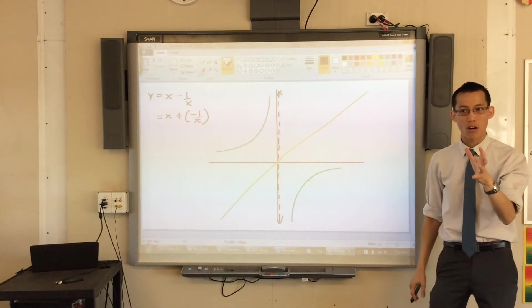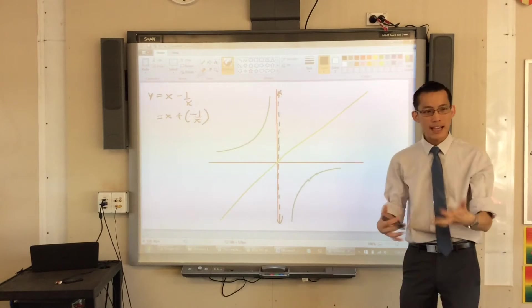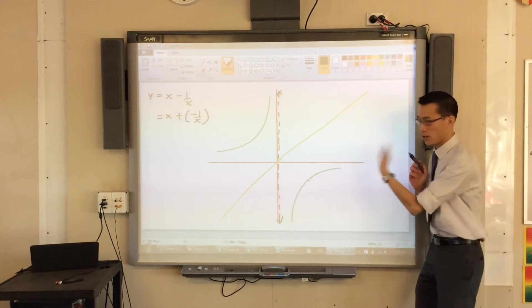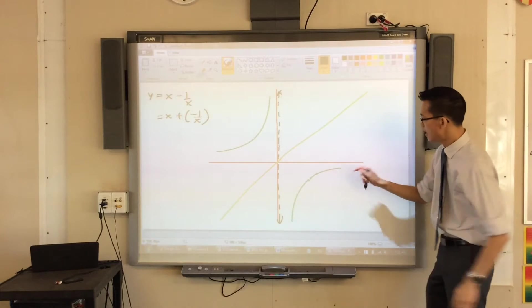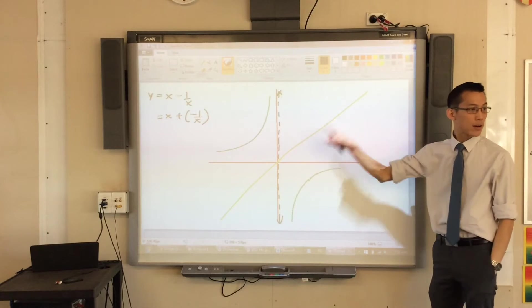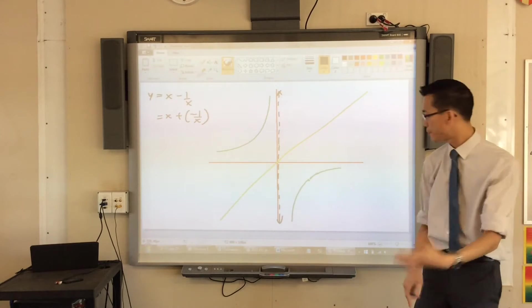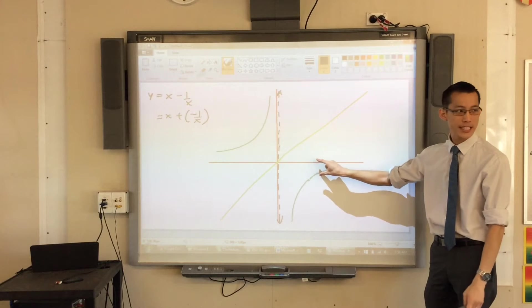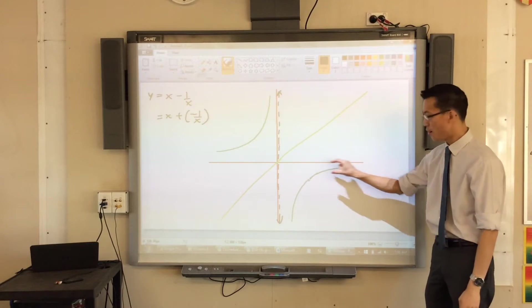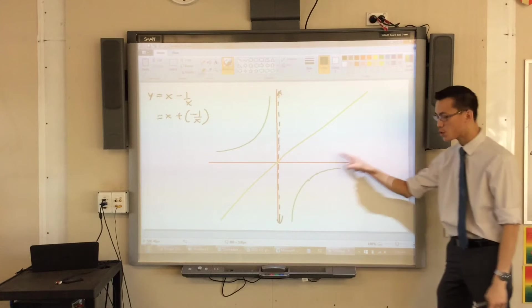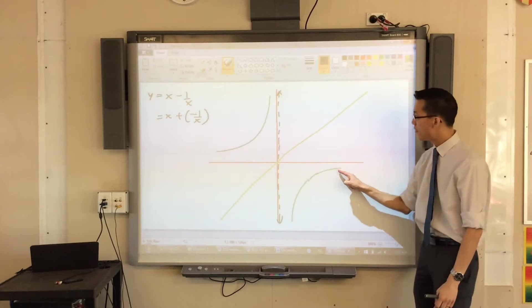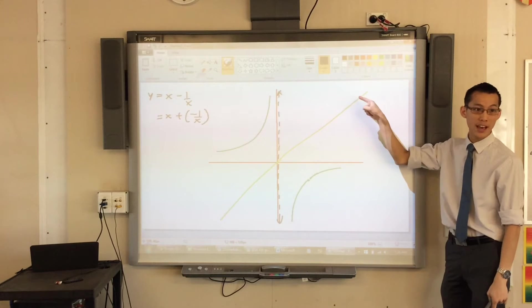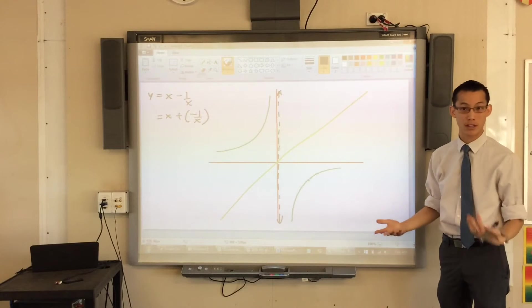Now what starts to happen when you go horizontal? Again, you can think, hold on, look over here on the right-hand side. On my y equals x, what I'm adding to that graph is an increasingly small amount, a very small quantity. So whenever you see this kind of behavior, that means you're going to be approaching something else in the same asymptotic way.